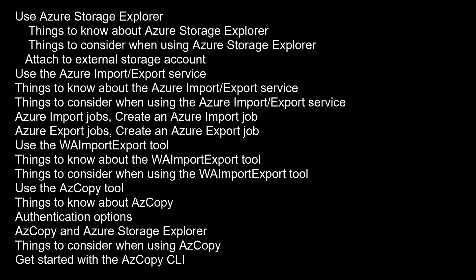Azure Import Jobs securely transfer large amounts of data to Azure Blob Storage or Azure Files. You ship disk drives to an Azure Data Center, the staff copies specified data to Azure Storage, and then returns the drives to you. Steps to create an Azure Import Job: (1) Create an Azure Storage account if you don't have one. (2) Determine the number of disks needed. (3) Identify the computer to use for data copy and attach the physical disks you intend to ship to Microsoft. (4) Install the WImport Export tool on the disks.